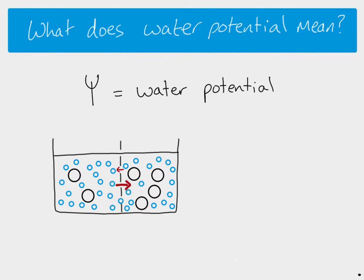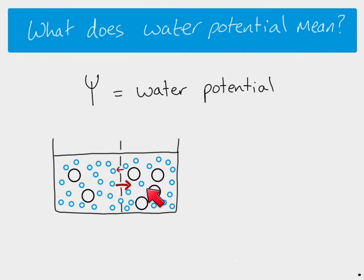Water molecules are going to move in both directions — from right to left and from left to right — they just move randomly. But because the solution on the left has more water molecules and is more dilute overall, you will get more water molecules moving from left to right than from right to left. So there is a net movement of water in that direction. The left side has a higher water potential and the right side has a lower water potential.